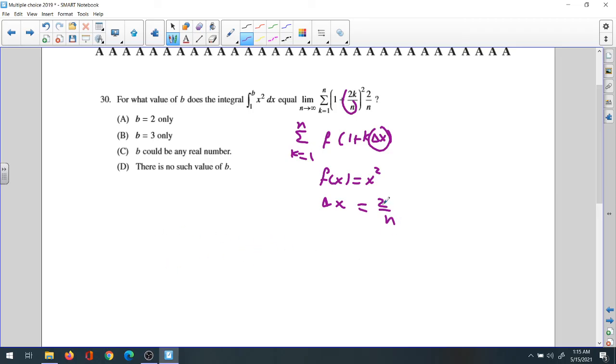If we plug in 2 over n for delta x, it will be 1 plus delta x times k. You could replace n for k because k is from 1 to n. Let's replace n for it: 1 plus delta x. That equals 1 plus 2 times delta x times n, which is 2. Then it's 3. So the integration of x squared dx will be from 1 to 3. B equals 3. The answer is B.